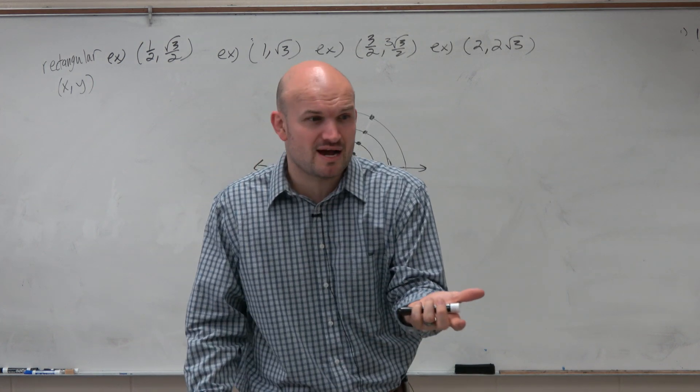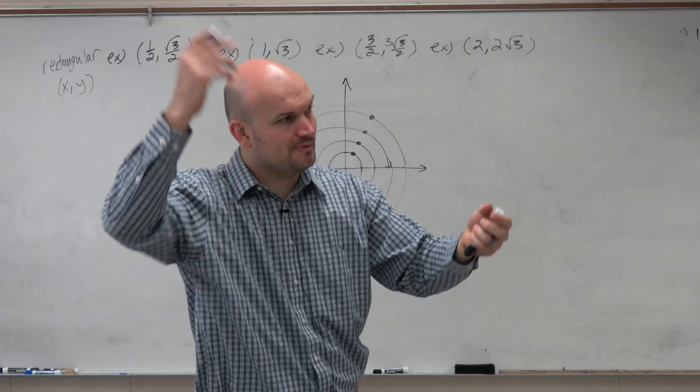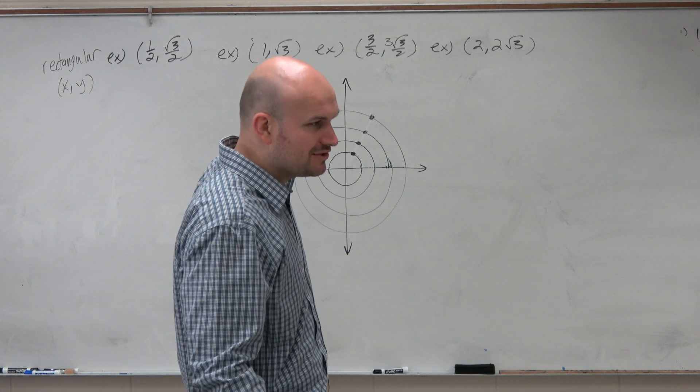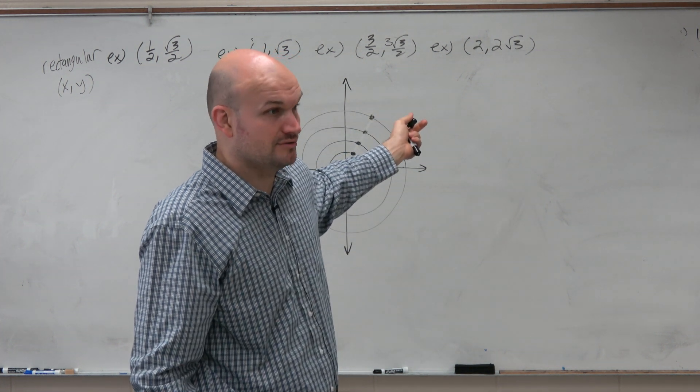So this isn't really very efficient. Rectangular points are great to graph if it's like 2, 3 - over 2, up 3, easy. But when you have radicals involved, it gets a little bit messy and it's harder to be exact. Would you guys agree?